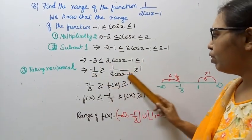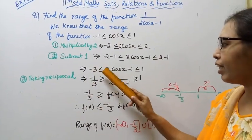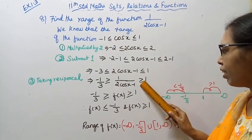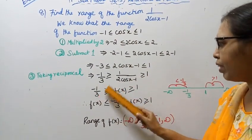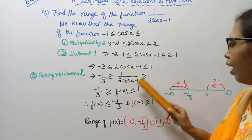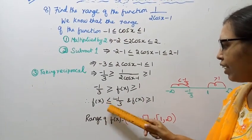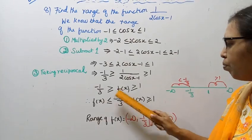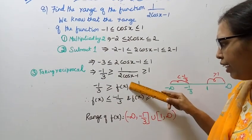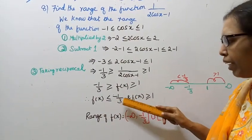When taking reciprocal, the inequality direction changes. So, we get: 1/(2cos x - 1) ≤ -1/3, or 1/(2cos x - 1) ≥ 1. That means f(x) ≤ -1/3 or f(x) ≥ 1.